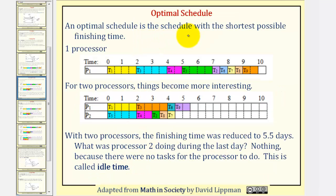For example, if we had two processors, the schedule might look something like this. Notice with two processors, the finishing time was reduced to five and a half days.